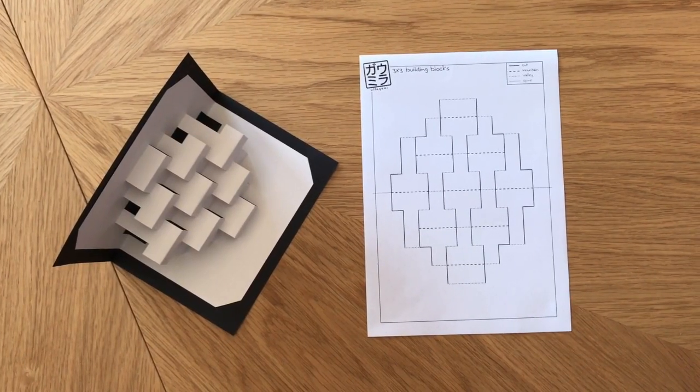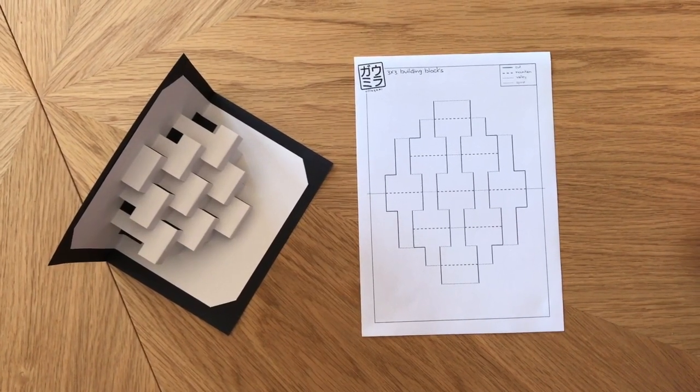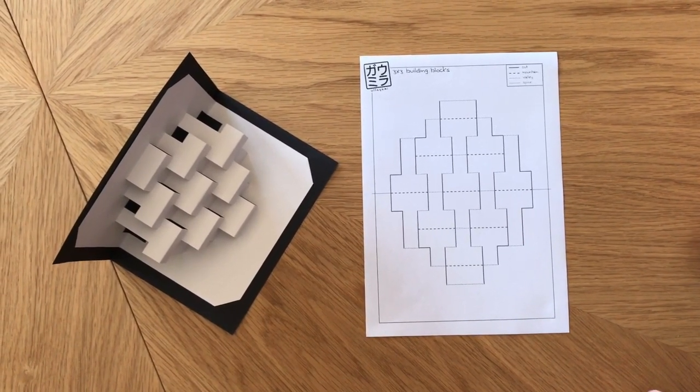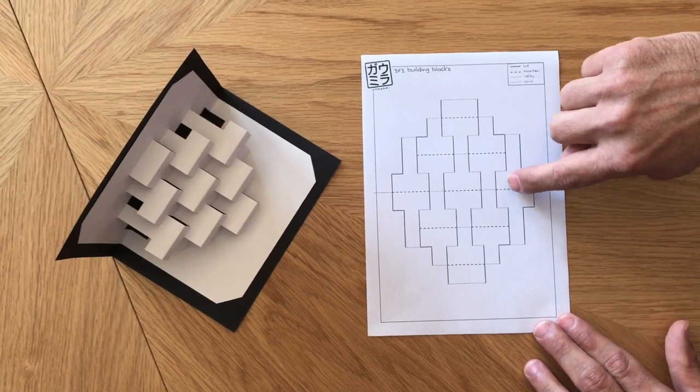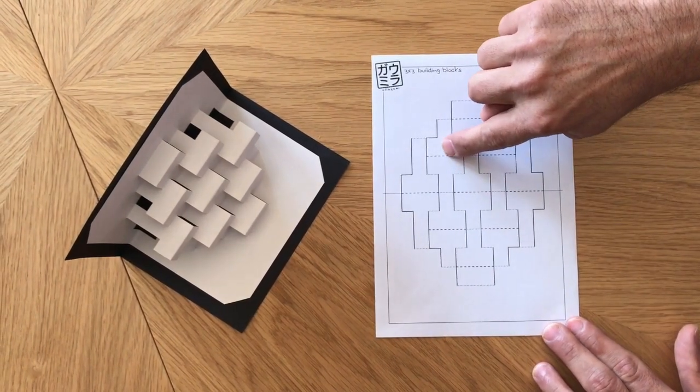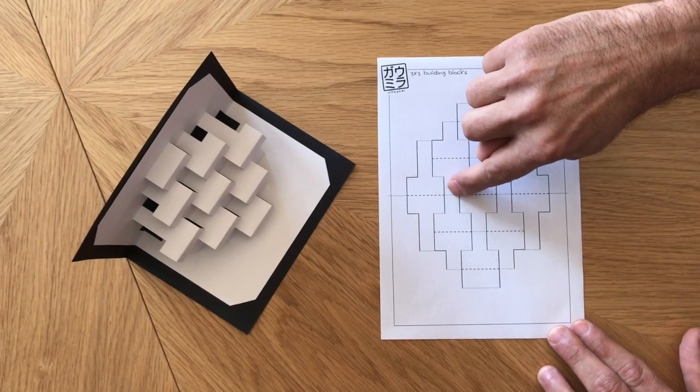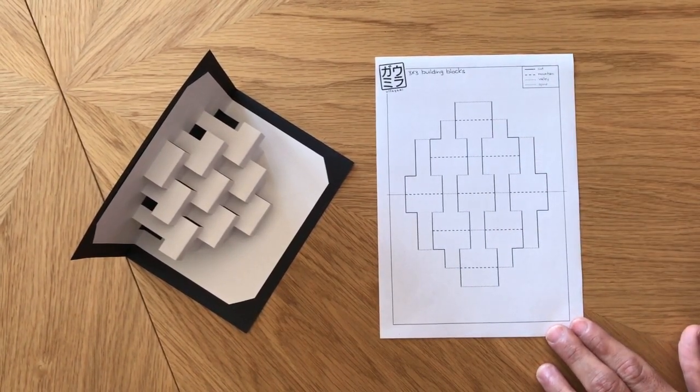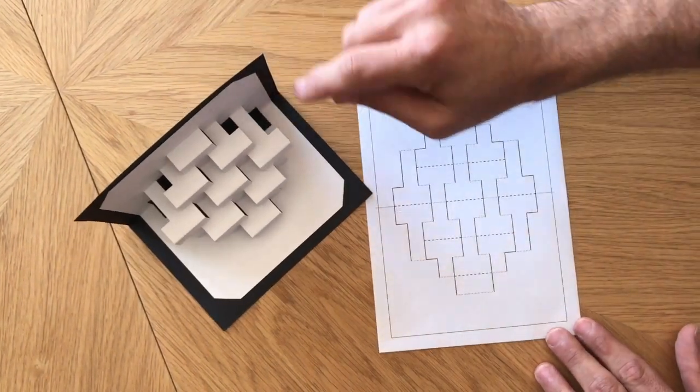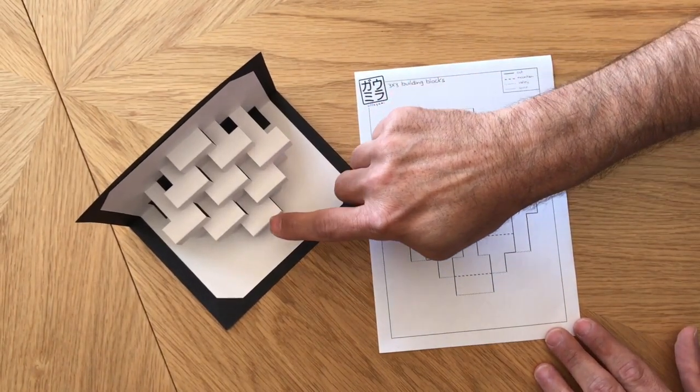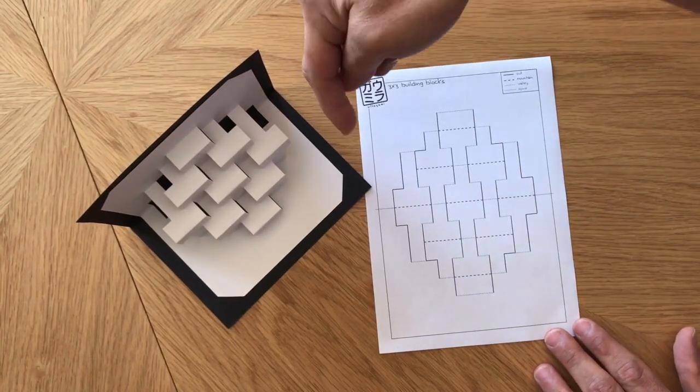Looking at the template you can see that there are two kinds of folds here, mountains and valleys. The mountain folds on the template are indicated by dashed lines and the valley folds by dotted lines. Mountain folds will pop out toward you in the finished model and the valley folds fold away from you.